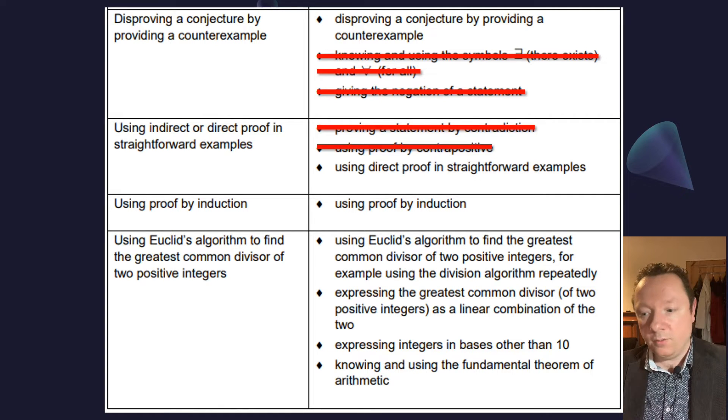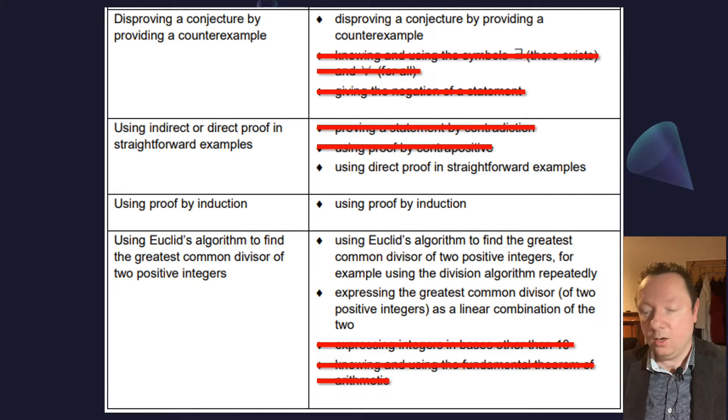Let's move on to Euclid's algorithm to find the greatest common divisor. The first point is fine, you'll still have to find the greatest common divisor of two positive integers. The second point is fine, expressing the greatest common divisor as a linear combination of the two. However, the third and fourth point are out. You won't have to express anything in bases other than 10. And you won't have to know the fundamental theorem of arithmetic or use it.